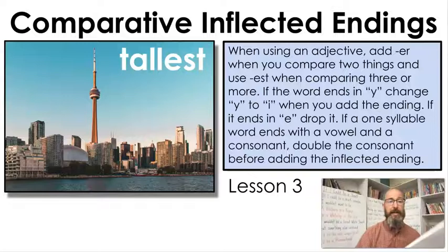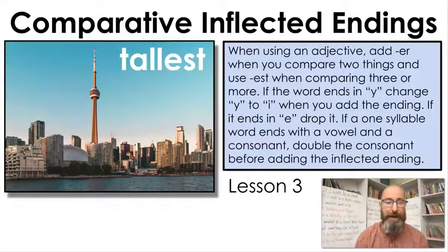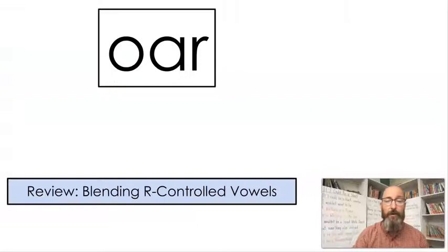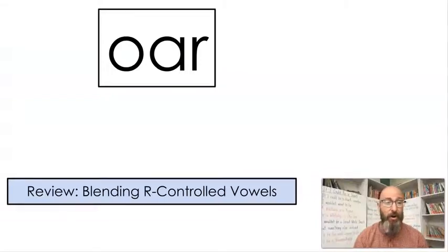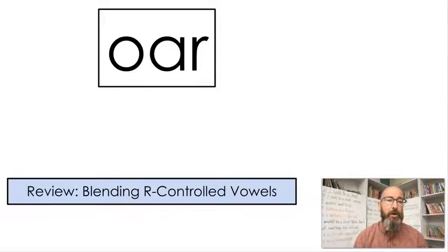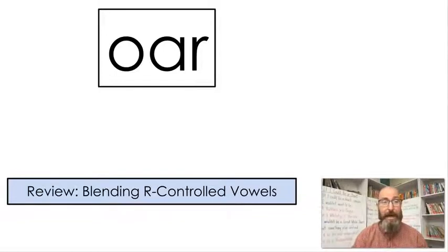Today we're going to look at some of our R-controlled vowels. R-controlled vowels are vowels that have an R with them, and they make an R sound. Some of these, as you'll see today, make the exact same sound. So we're going to look at the different ways that sound is spelled, and we're going to review how to spell those as well.